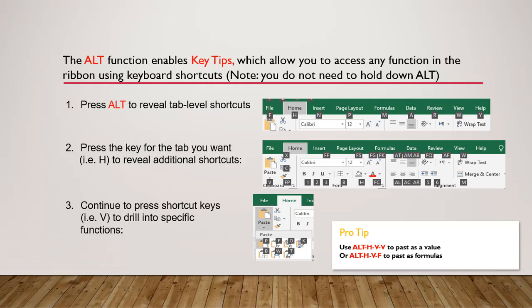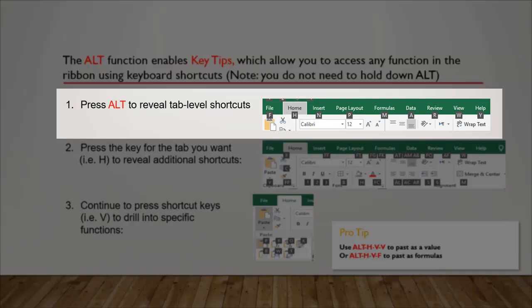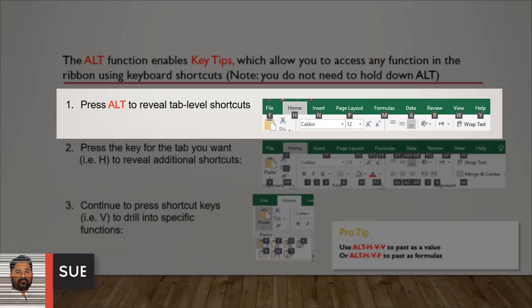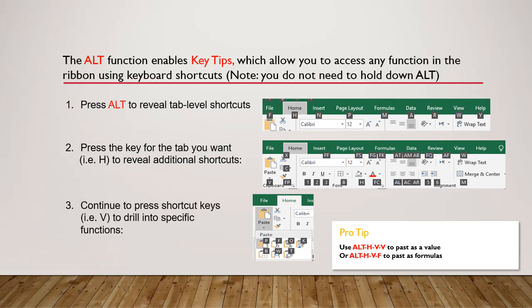The first function of the Alt key: when you press it, it reveals tab-level shortcuts. You can see in Excel that all the tabs of Microsoft Excel are labeled with letters — F, H, N, P, M, A, R, W, and Y.